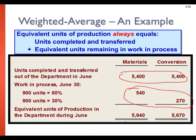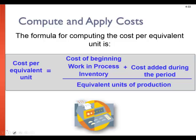Equivalent units of production always equals the units that were actually completed — which was 5,400 — plus the equivalent units remaining in work in process, computed separately for materials and conversion. That gives us the total number of units produced in equivalent units. We can then use those equivalent units to divide the total cost of production to get a cost per equivalent unit.